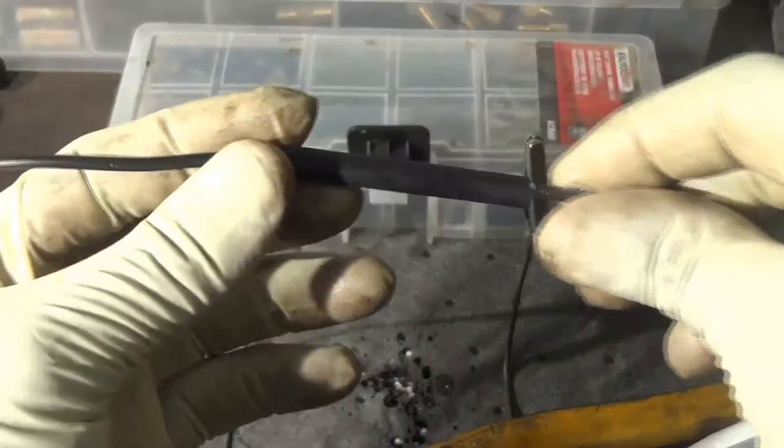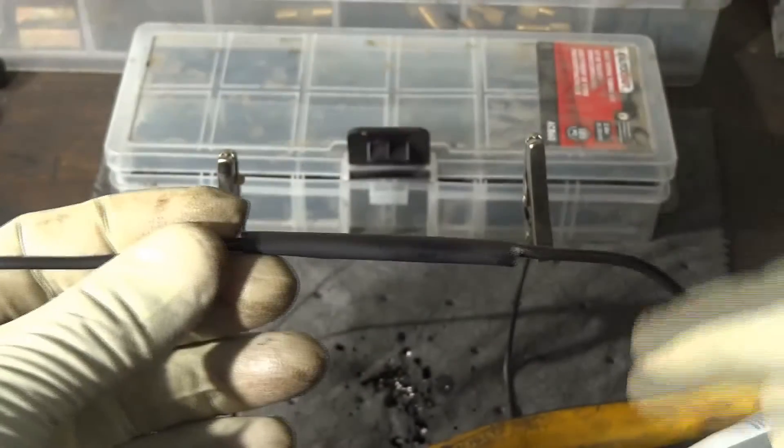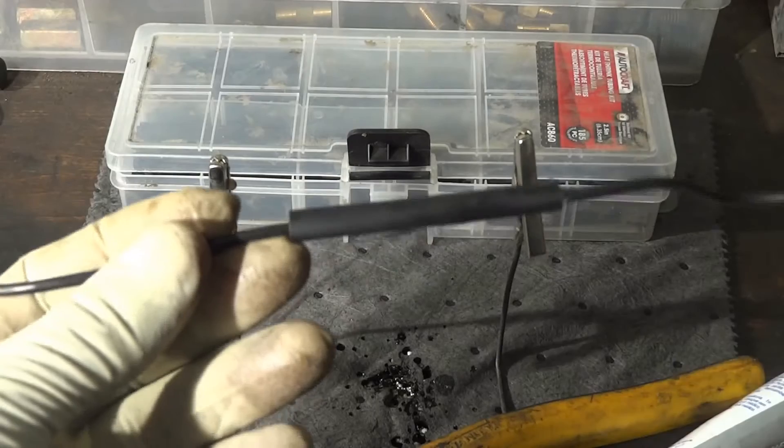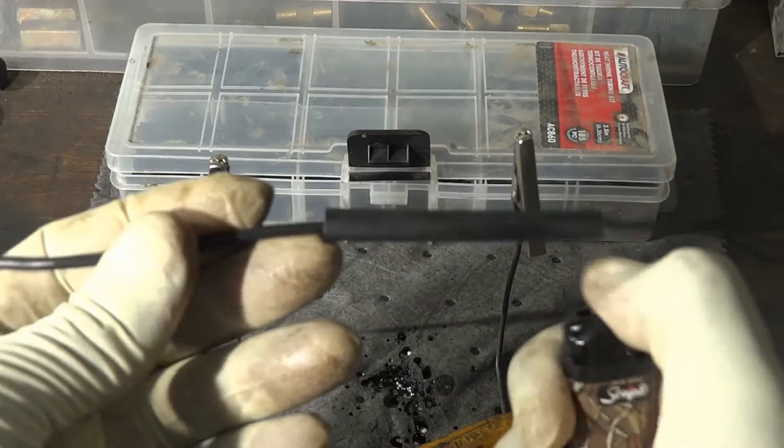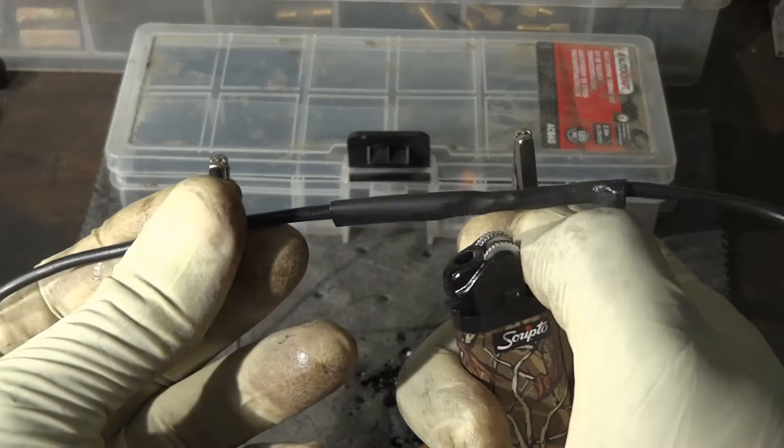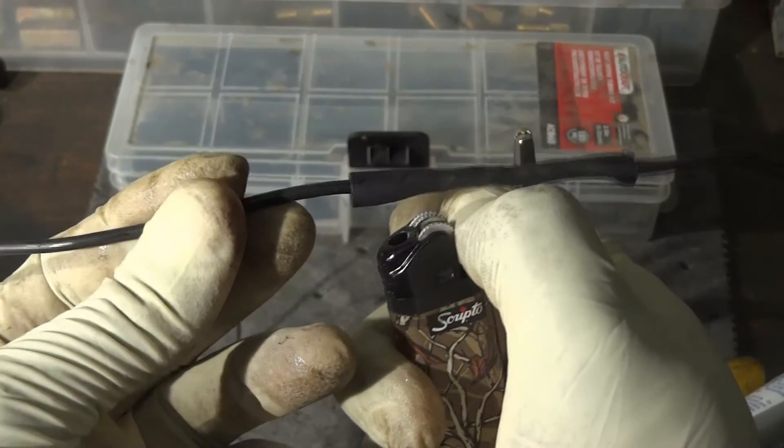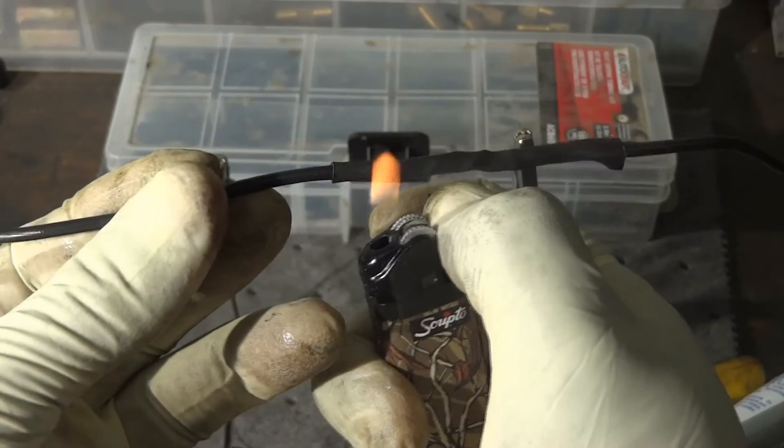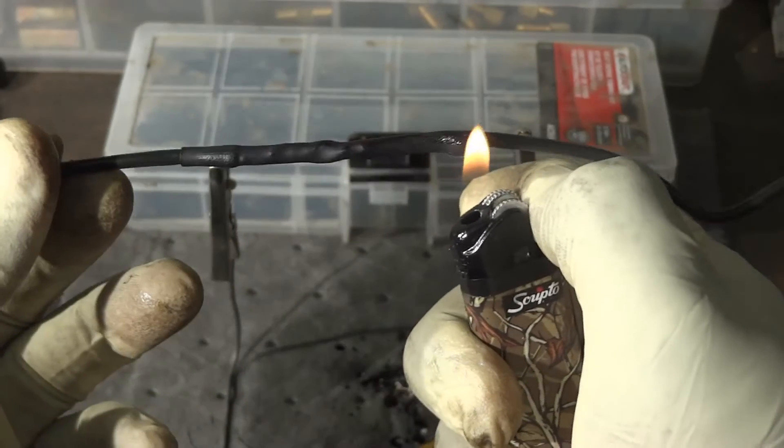You want to get a heat shrink tube that goes just slightly over your wire, because if you pick a bigger heat shrink tube, it's not going to seal against the wire properly.